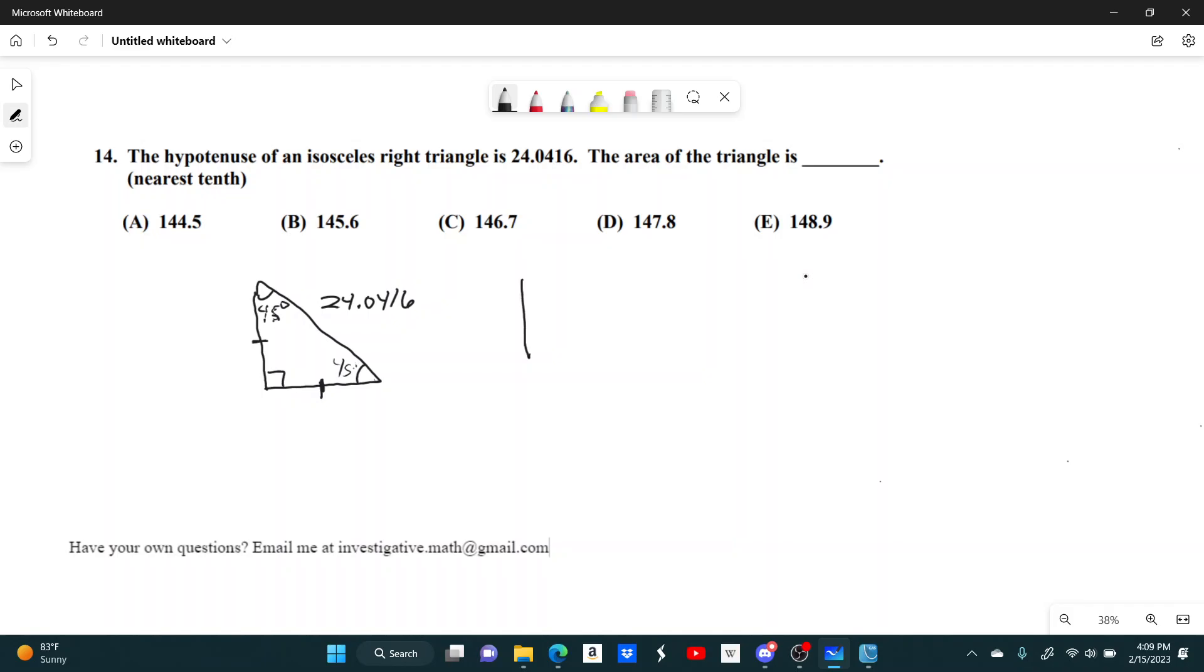What this tells you is there's a certain ratio between the sides of a 45-45-90. The sides have length x, and the hypotenuse has length x times the square root of 2.